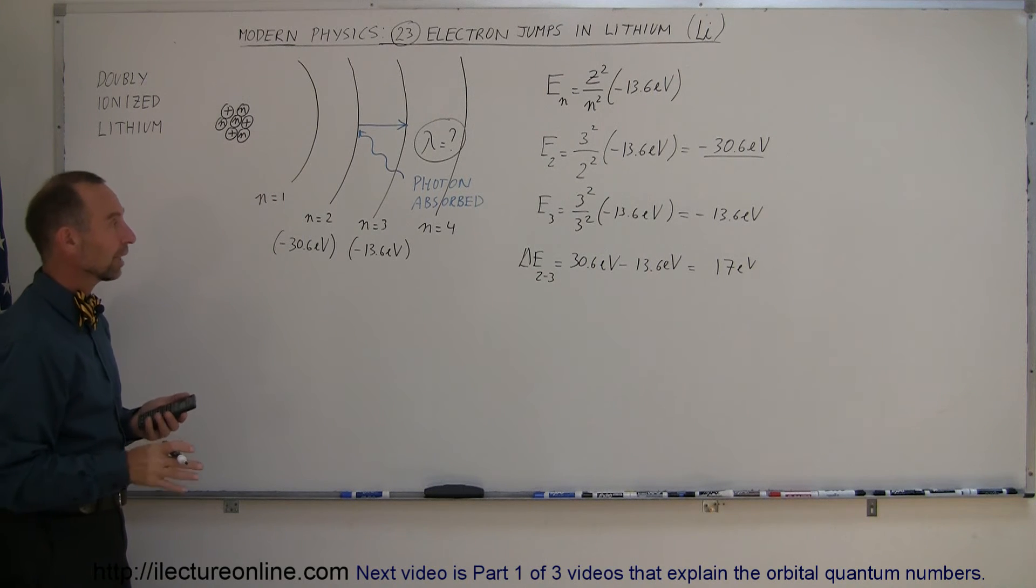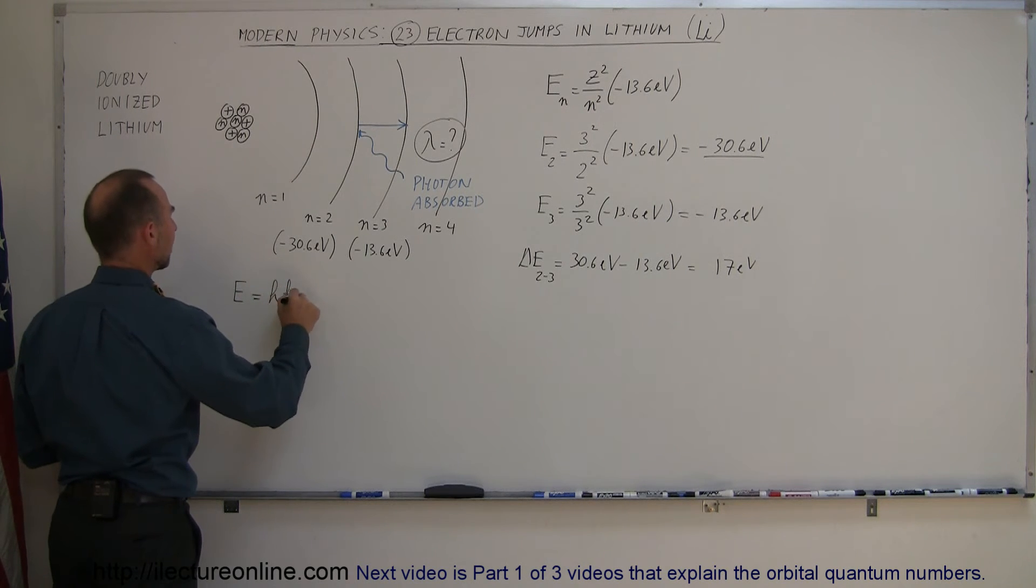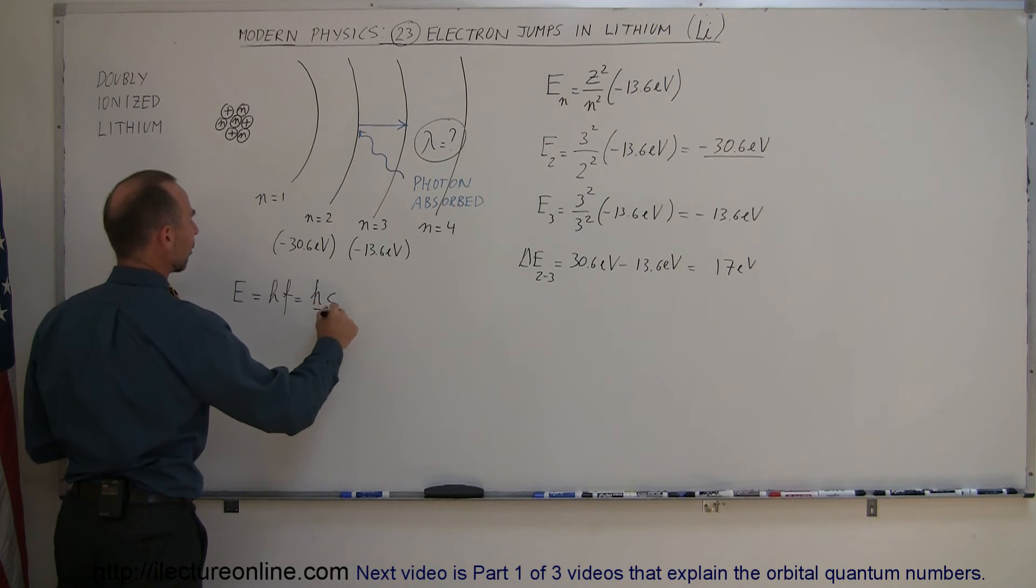Now, to find the associated photon, we say that the energy of a photon is equal to H times the frequency, which is equal to H times C over lambda.